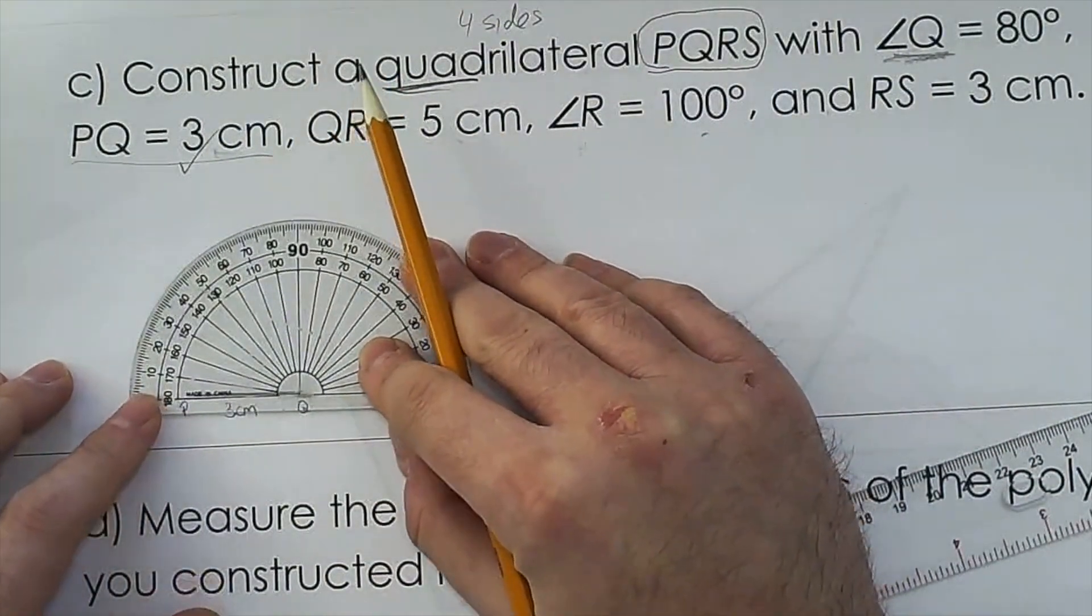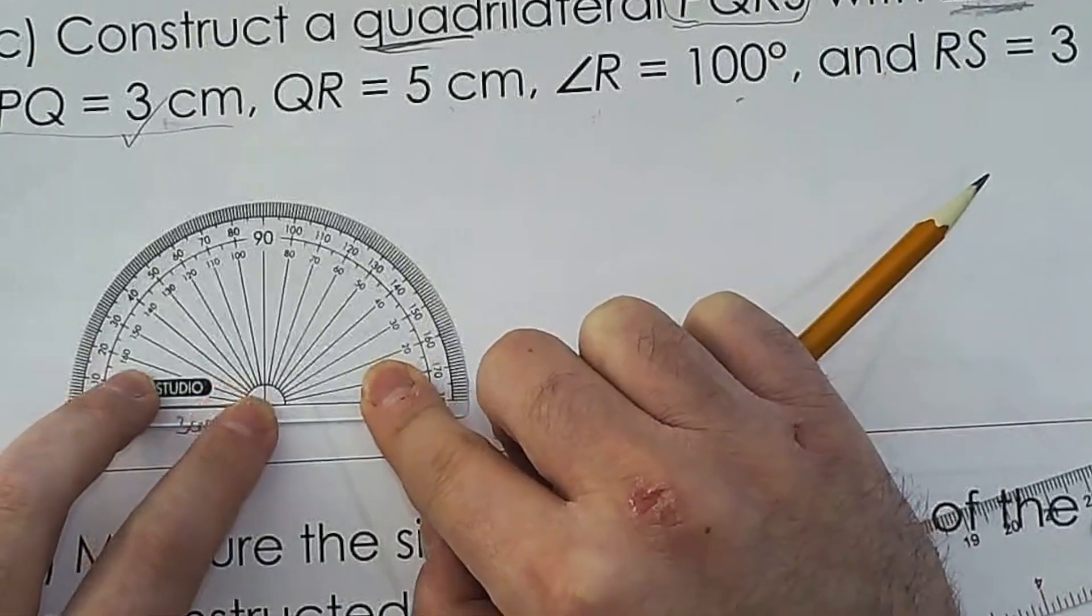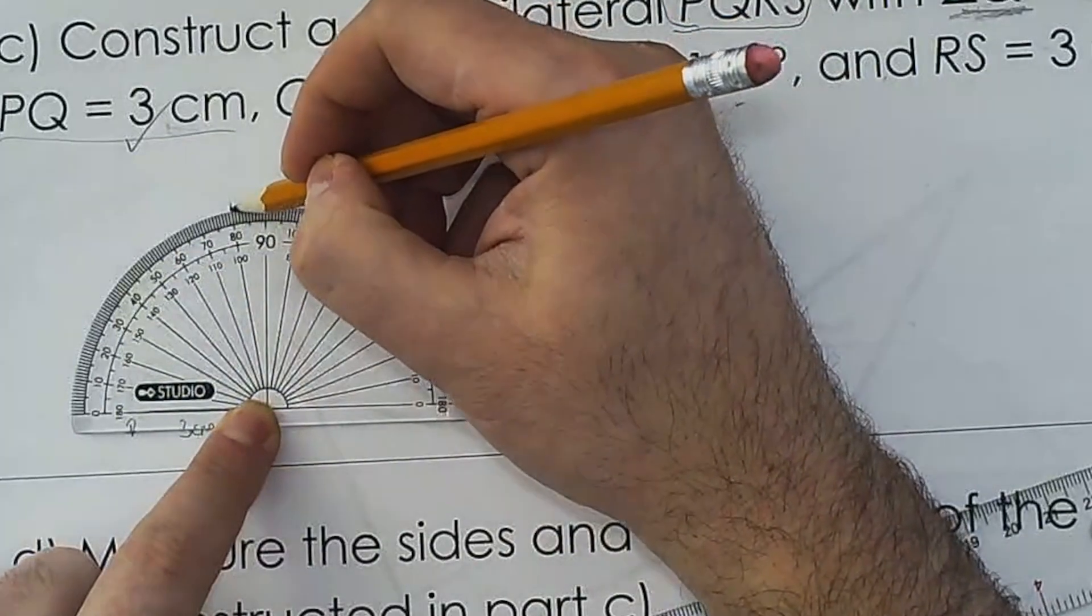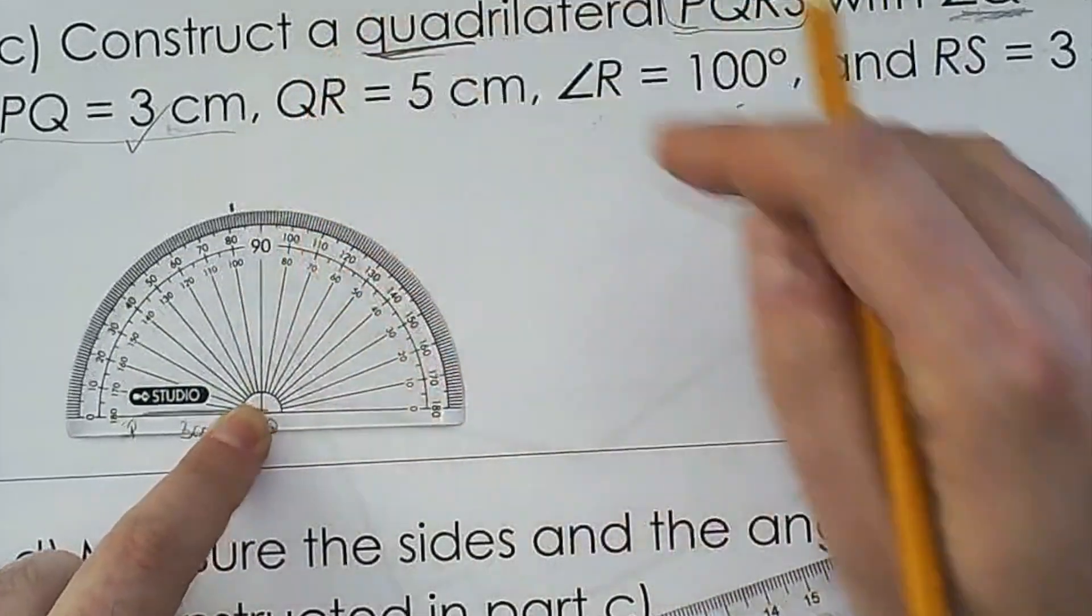So I'm going to do it right here. Angle Q is 80 degrees. So since the line is on the left, you use the outside, and then we go 80 degrees.